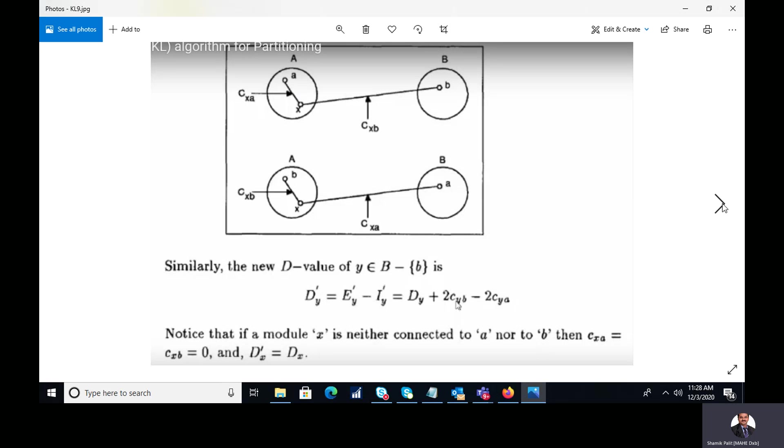The same concept we can also apply for a node y belonging to the cluster B in the following way, that D'y equal to Ey' minus Iy', which is equal to Dy plus 2Cyb minus 2Cya. So thus we have completed lemma 2 with a new definition of Dx, that is actually the profit for interchanging two nodes between each other in two different clusters.